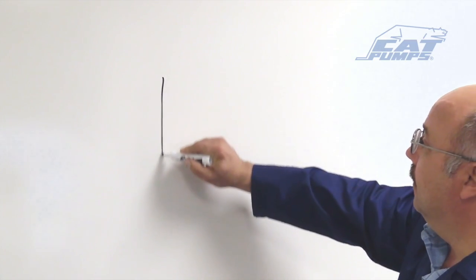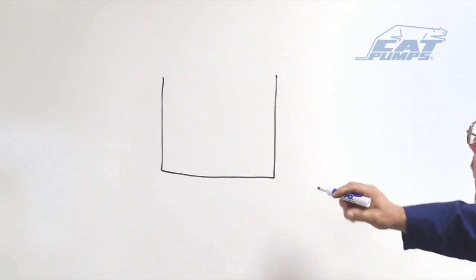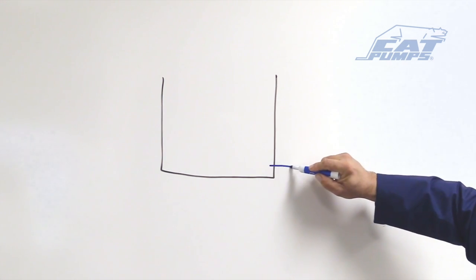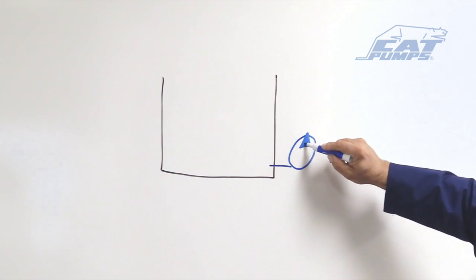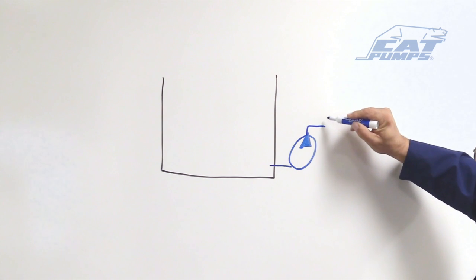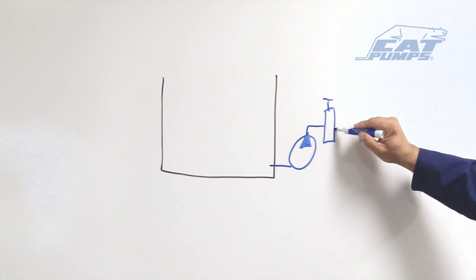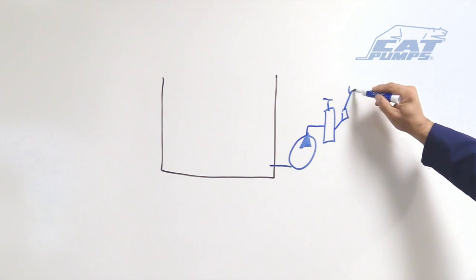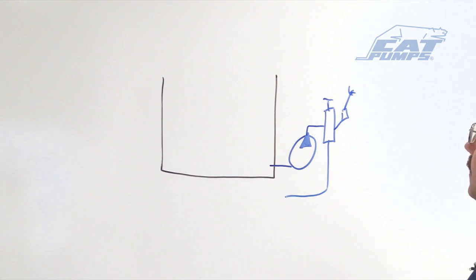So first of all, we're going to draw a nice rectangle feed tank and we're going to connect to it an inlet line that goes to our pump. Now with any system, this water has to go somewhere afterwards, so we're going to just for this example put in a little regulator here, trigger gun, spray nozzle, and of course the regulator will have a bypass line coming out of it.